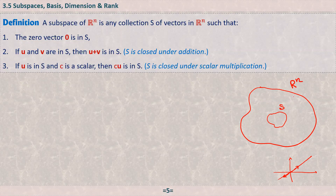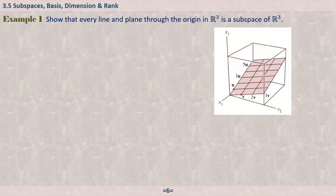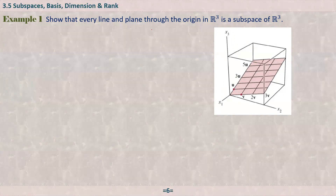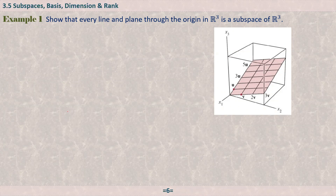For our first example, we show that every line and plane through the origin in R3 is a subspace of R3. This actually has two parts: first the line, then the plane.